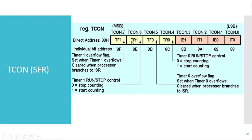The next bit is TF0, the overflow flag for Timer 0. Whenever Timer 0 overflows, this flag becomes 1 to indicate the overflow, and it is generally 0 otherwise. The last bit is TR0, related to Timer 0 — when this bit is 0 the timer is stopped, and when it is 1 the timer keeps counting.